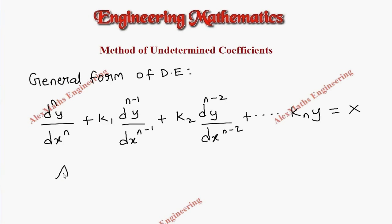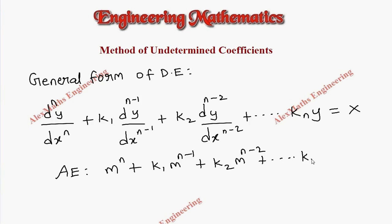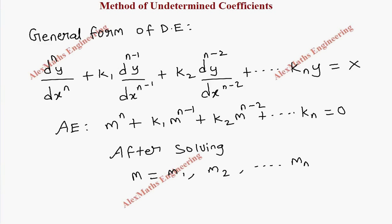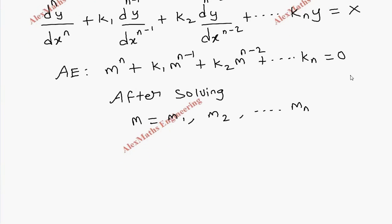We will write the auxiliary equation in terms of m: m^n plus k1 m^(n-1) plus k2 m^(n-2) plus dot dot dot plus kn equals 0, and we solve to get the values of m as m1, m2, m3 up to mn. Let's consider a second order differential equation.